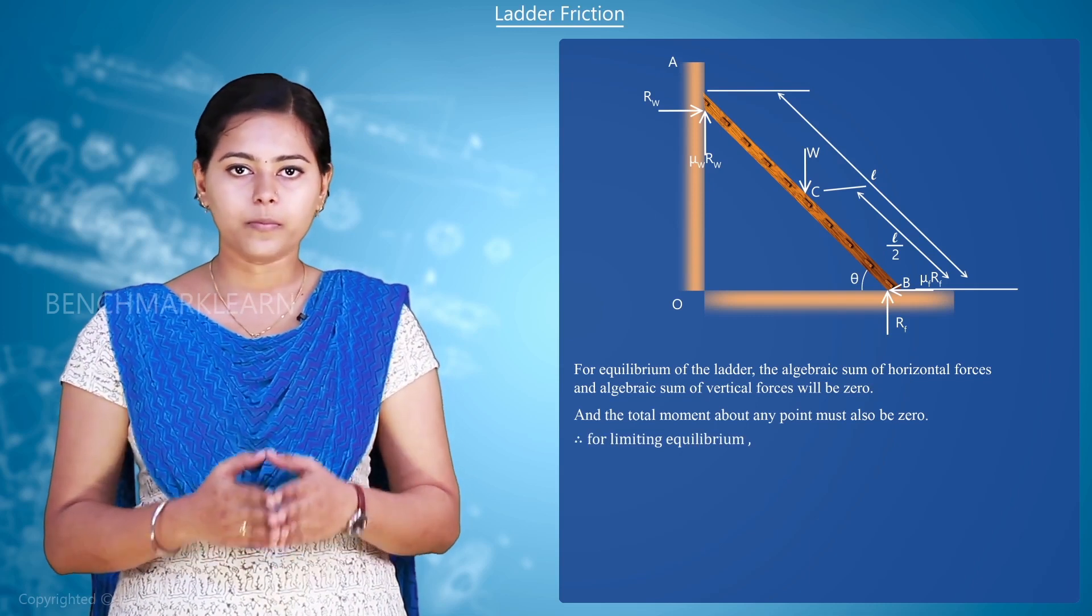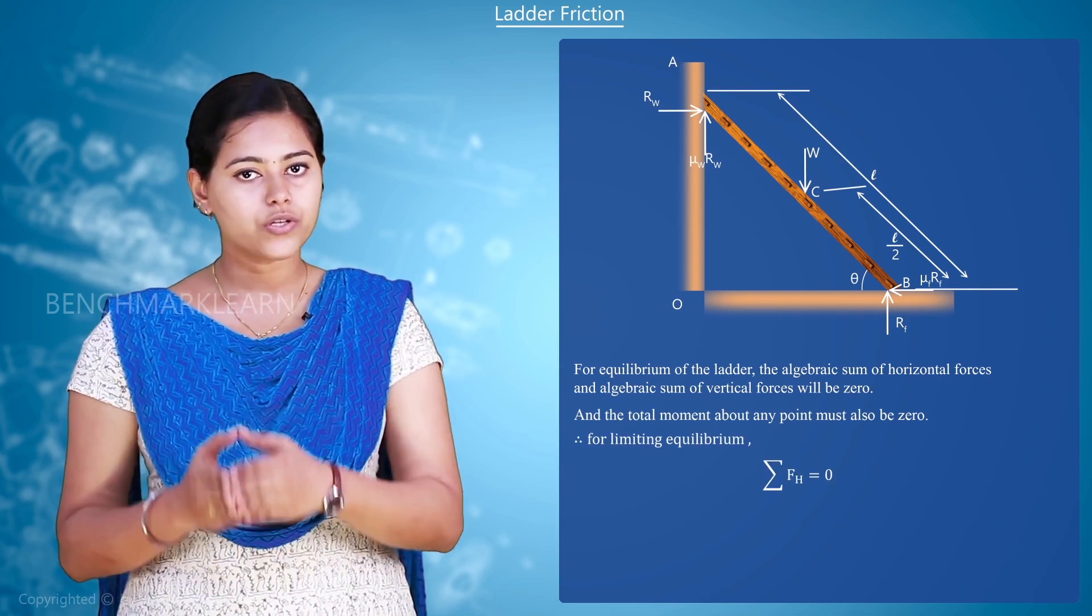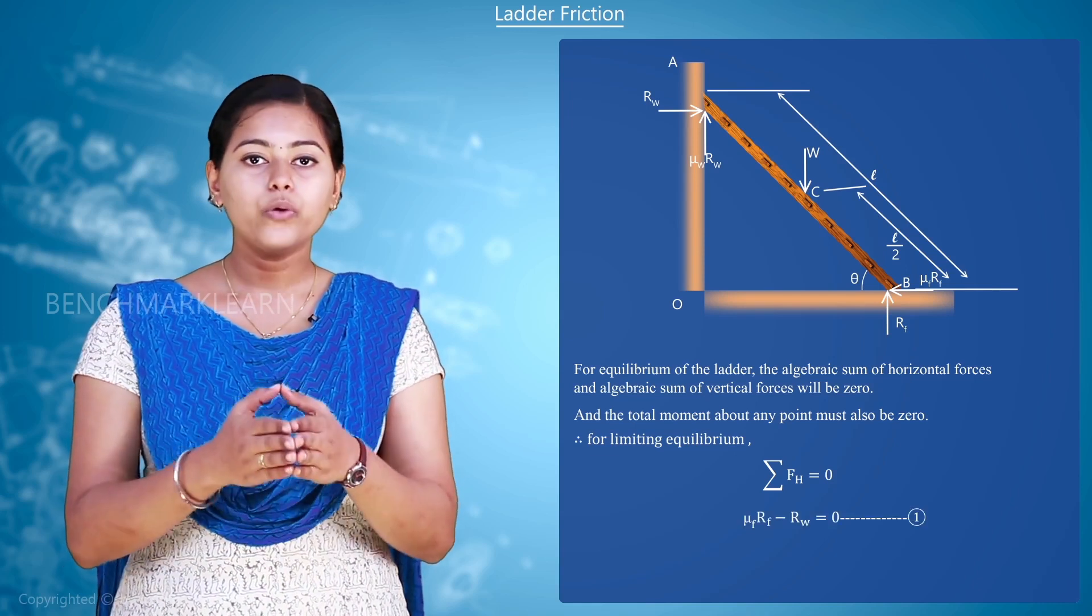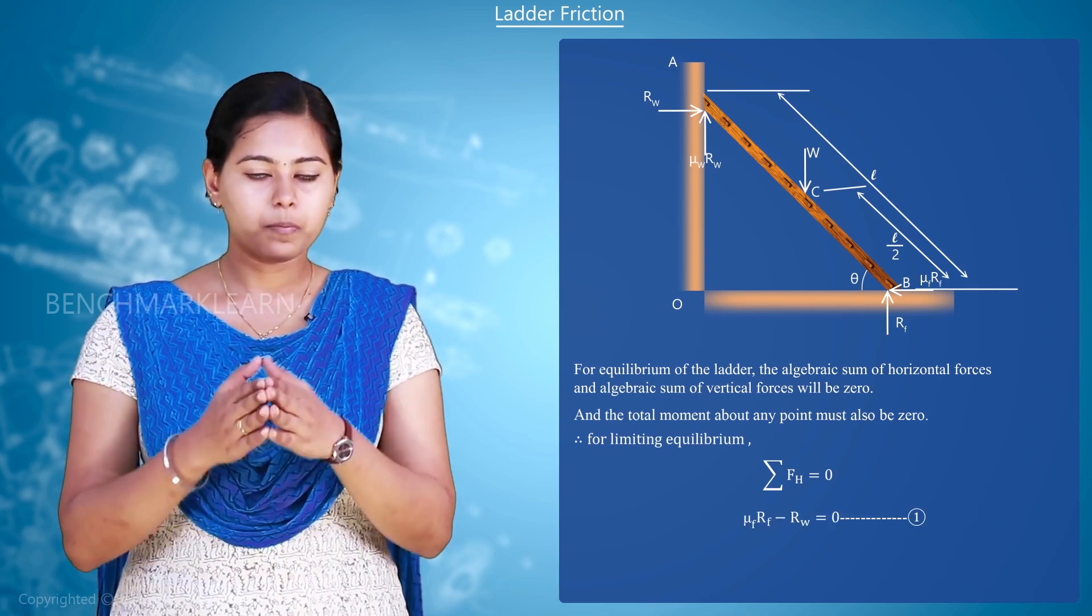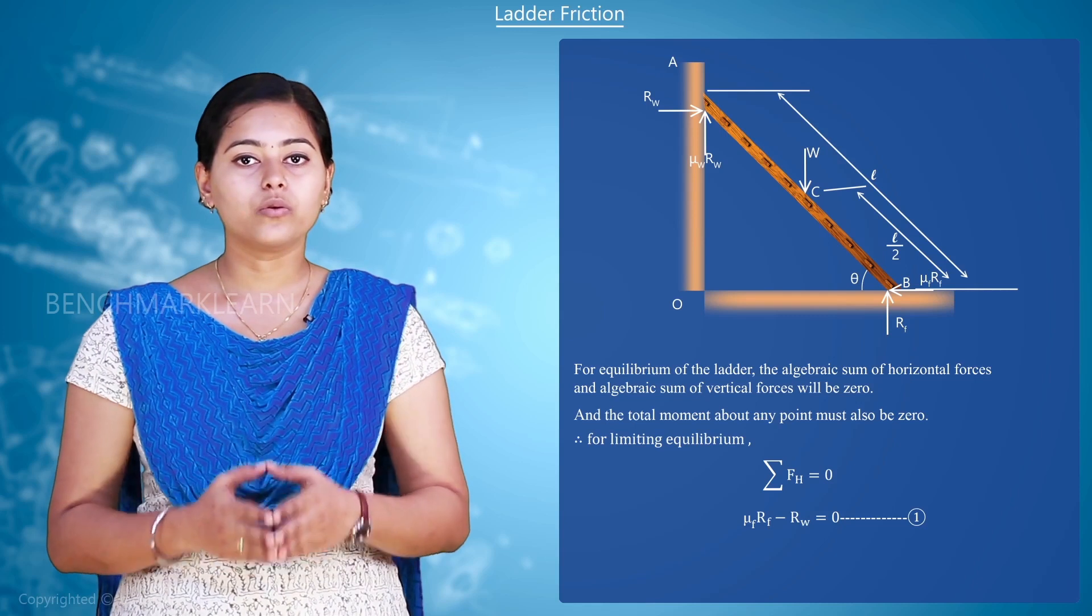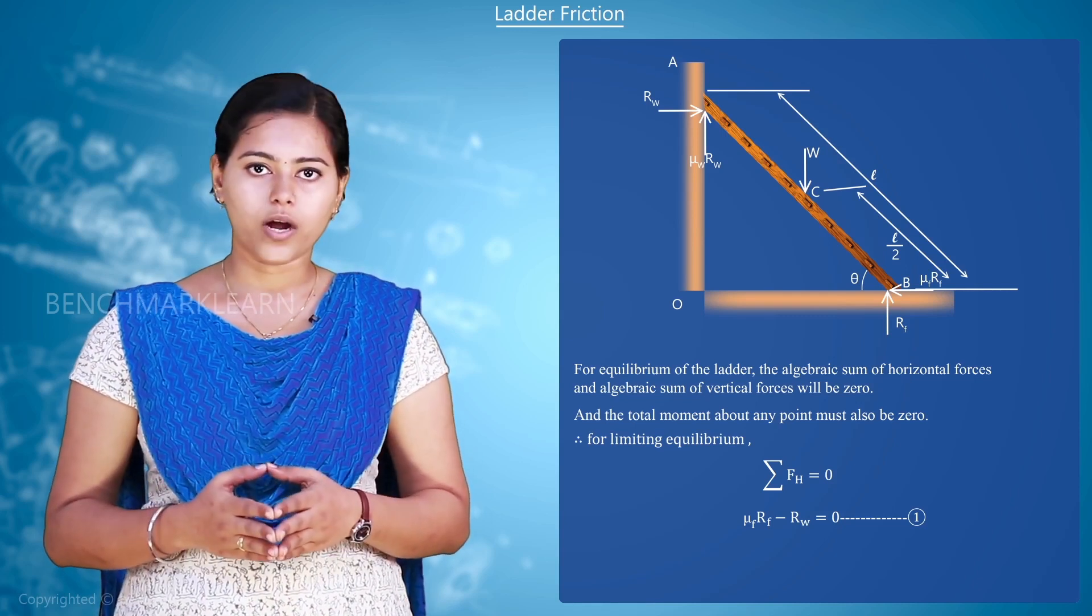Therefore, for limiting equilibrium we can write sigma Fh is equal to 0. That is mu F into Rf minus Rw is equal to 0. Mark it as equation number 1.